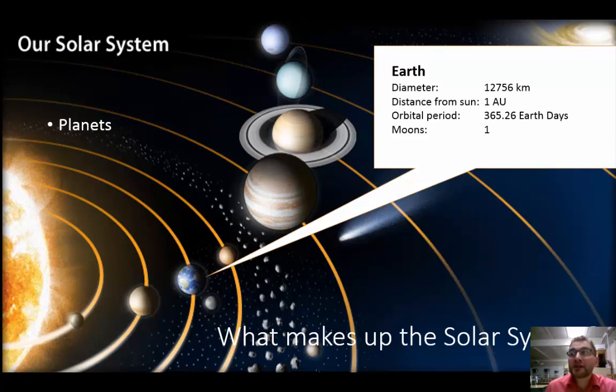The third planet from the sun is Earth. Again, its diameter is very similar to that of Venus. Its distance from the sun is one astronomical unit. And as we already know, it takes 365.26 days in order for it to make one complete orbit around the sun. We also have one moon.